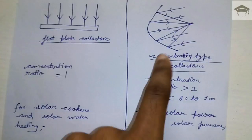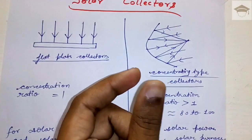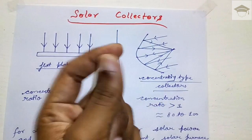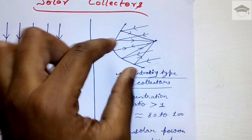Flat plate collectors are of low cost because of simple construction. Concentrating type collectors are of high cost because more complex construction is needed.